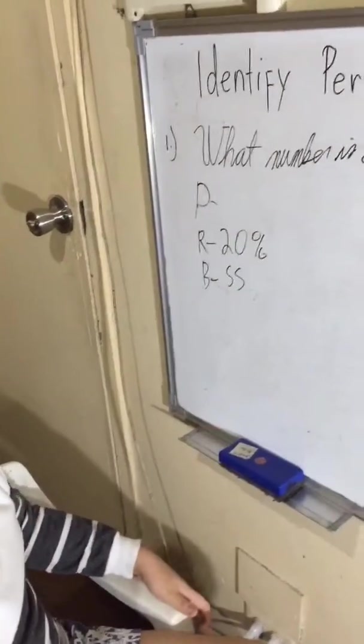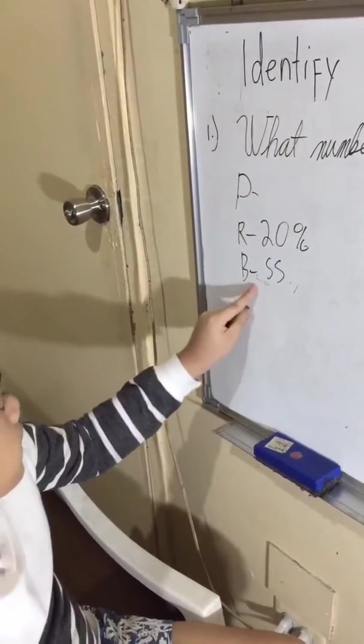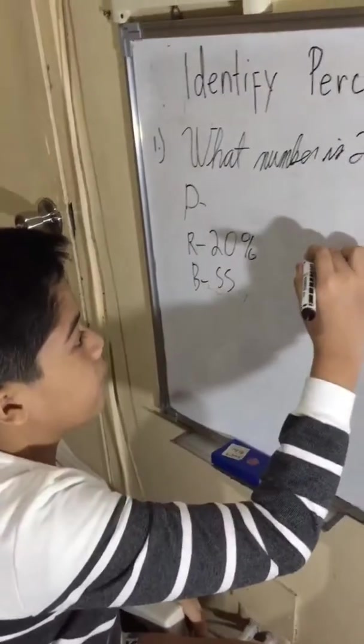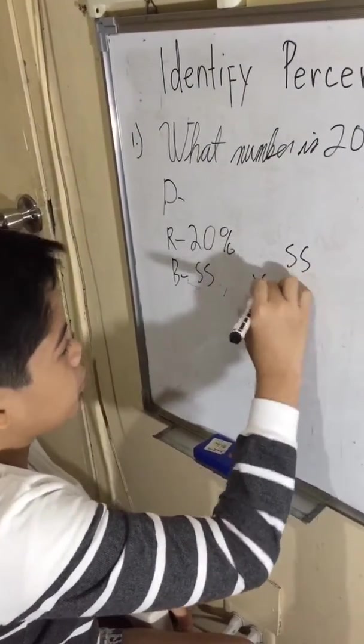Now to find this, we need to multiply the base by the rate. So 55 times 0.20.